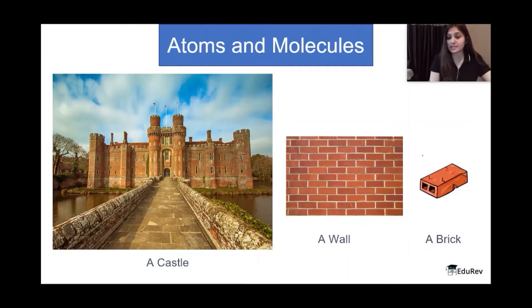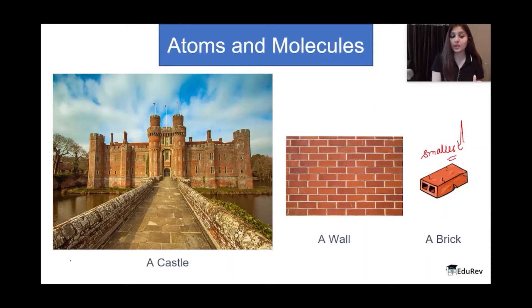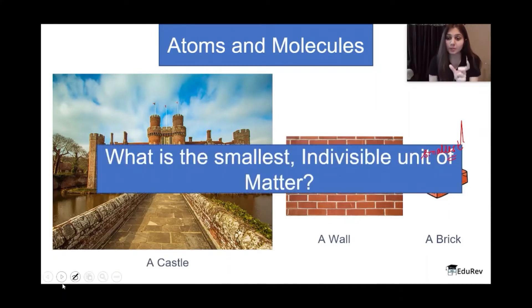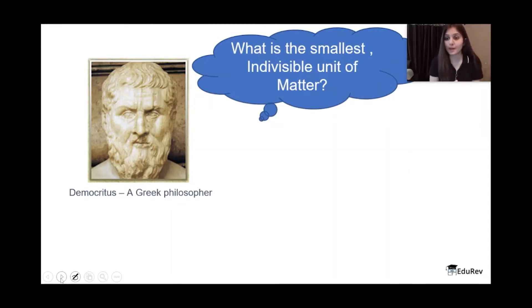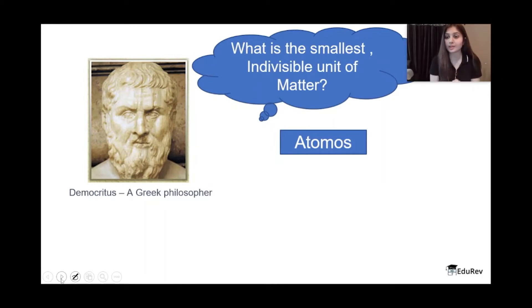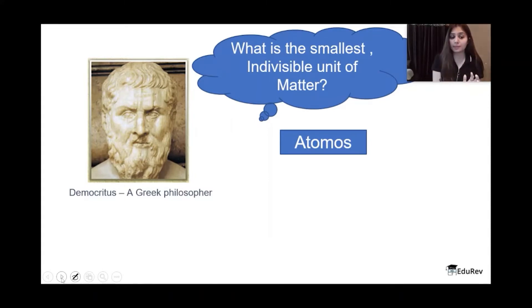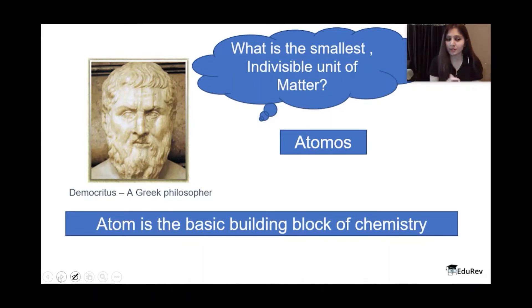A brick is nothing but the smallest unit of the entire castle — or the entire castle is made up of one repeating unit, which is the brick. The same question could be asked for matter: what is the smallest indivisible unit of matter? Scientists were really curious to know what is the basic unit of matter. This question was first asked by a Greek philosopher called Democritus. He called that basic unit atomos — there's no typo — and today we call it atom. The idea was that if we keep dividing matter into smaller and smaller parts, we will reach a point that is not further divisible, and that point is called atom.